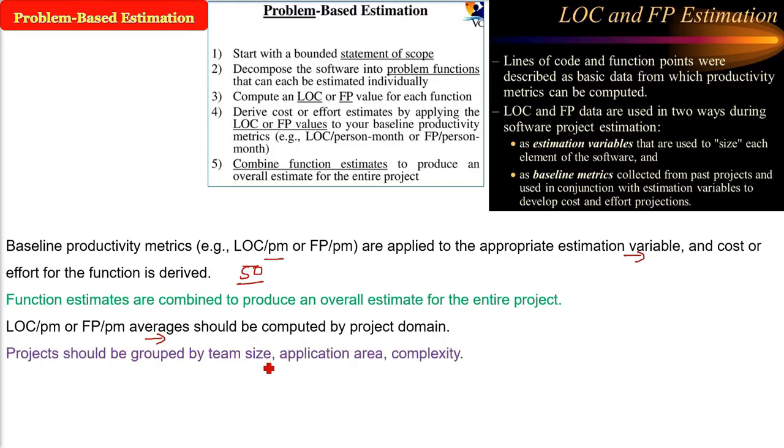Projects should be grouped by team size, application area where it works, and complexity. It is easy, it is complex, and then local domain averages should be computed. Every project and computation has to have some local limitation and boundaries also.